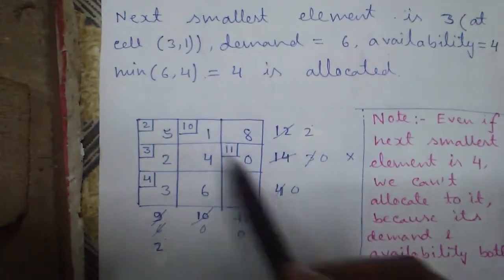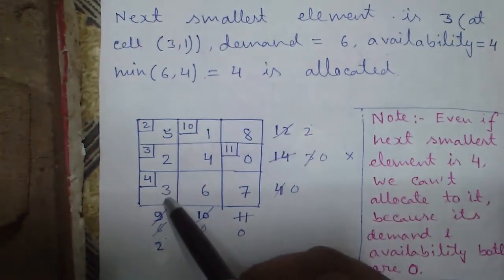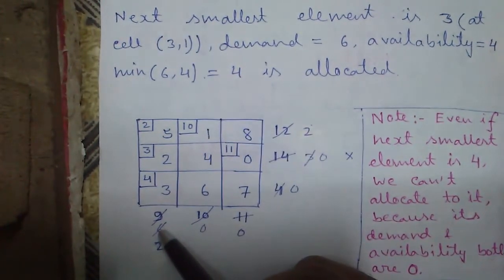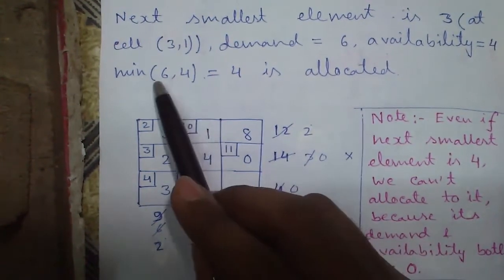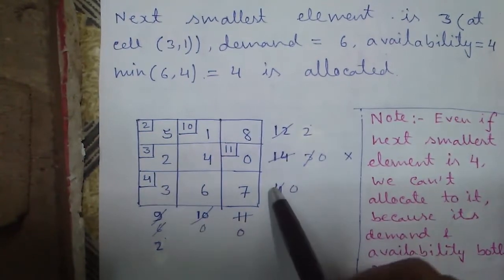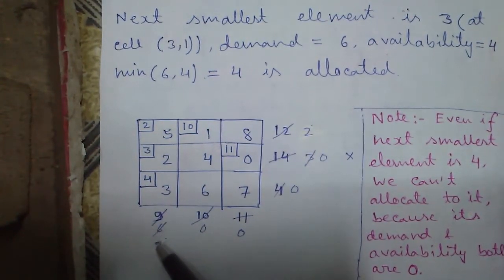3,1 means row 3 and column 1. So against this number 3 we have our demand of 6 units and supply of 4 units. So we can allocate minimum of 6, 4, which is 4. So our supply will reduce to 0 and demand will reduce to 6 minus 4, which is 2.